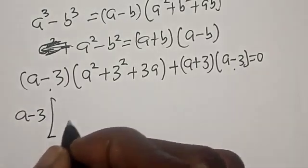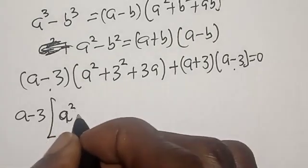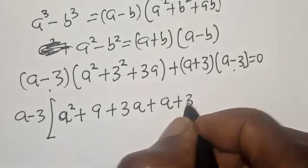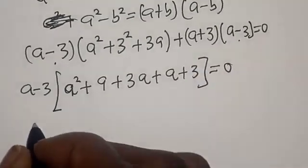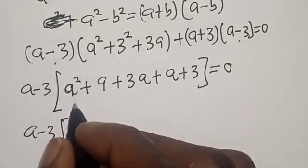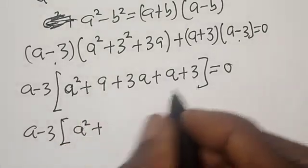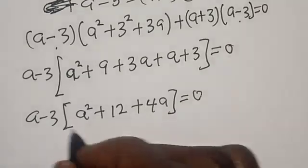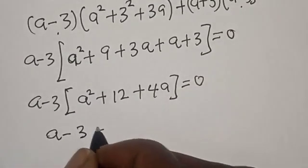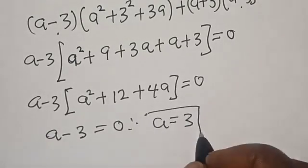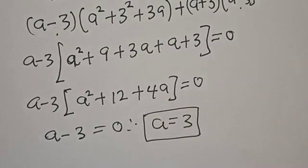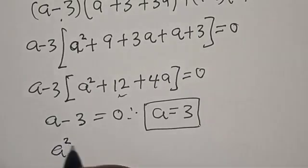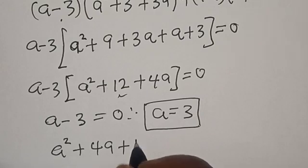(A minus 3) times (A squared plus 4A plus 12) equals 0. From the first factor, A minus 3 equals 0, therefore A is equal to 3. For the real value of A, we now solve A squared plus 4A plus 12 equals 0.